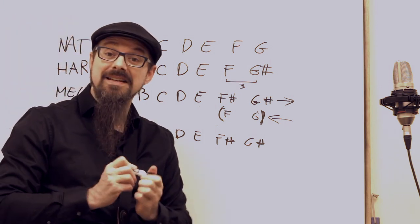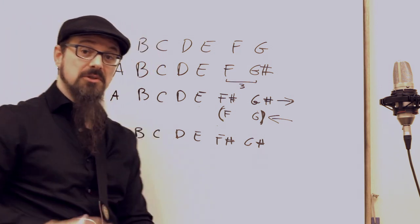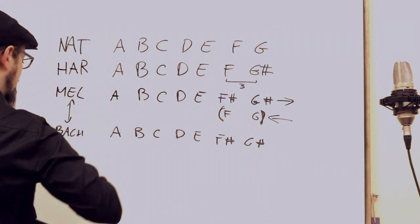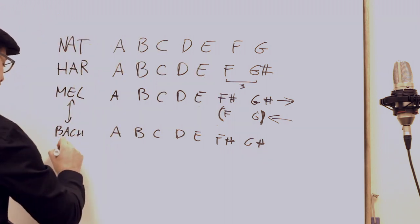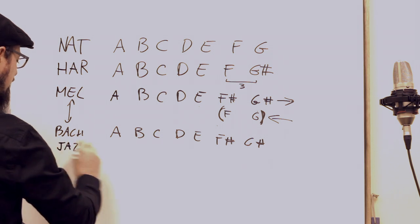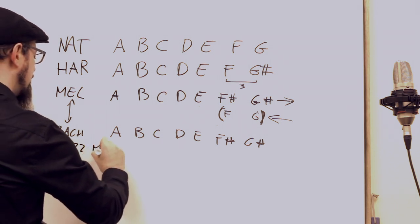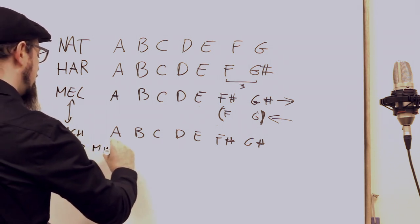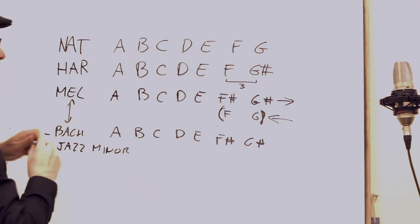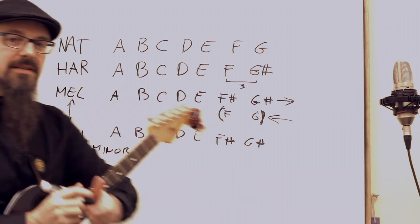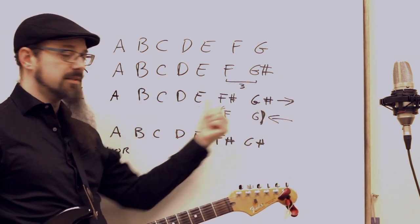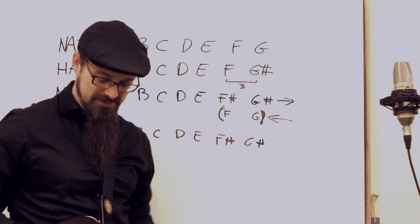Interestingly enough, this is also what we would call the jazz minor scale. Some people, at least some jazz colleges, call this scale the jazz minor scale - meaning it's like the melodic minor, but without the nonsense of changing the notes going up and down.